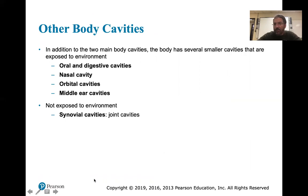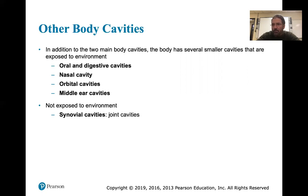In addition to the two main body cavities, the body has several smaller cavities exposed to the environment. Any cavity with a mucus membrane is exposed to the external environment — your digestive tract, respiratory tract, and reproductive tract are literally outside your body. They're hollow tubes exposed to the outside; you could fill them with water and pour it back out. Areas not exposed to the environment include synovial cavities like joints — there's no way for the outside environment to get into those areas.